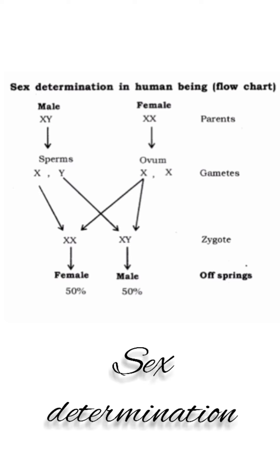50% of sperm carry the X chromosome while the other 50% carry the Y chromosome. After fusion of male and female gametes, the zygote would carry either XX or XY, depending on whether the sperm carrying X or Y fertilizes the ovum.